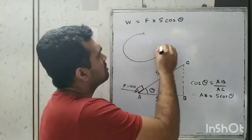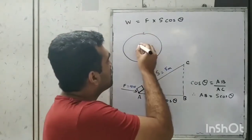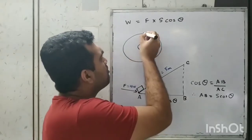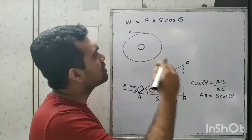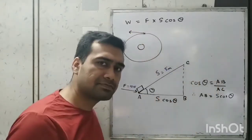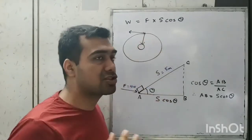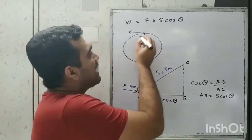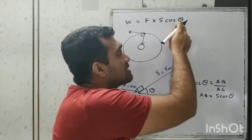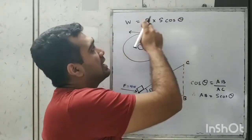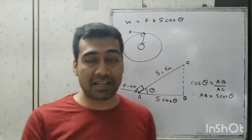In circular motion, like the revolution of the moon around the earth, at every point the displacement is along the tangent. The centripetal force — provided by the gravitational force of the earth — is directed inward. The angle between force and displacement is 90°, and cos 90° = 0, so the work done by the gravitational force of earth is 0.